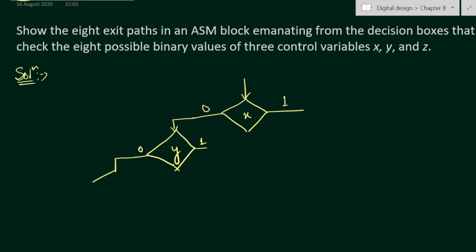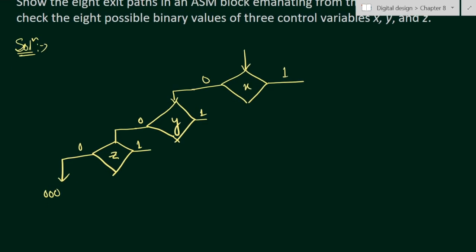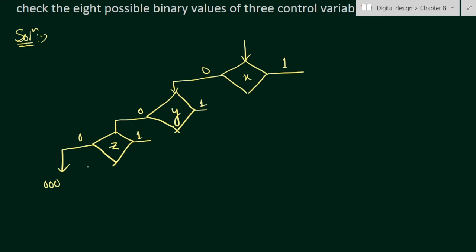We add another decision box for Z. When Z equals zero it comes this side, and Z equals one goes the other side. So for X=0, Y=0, Z=0 we get combination 000, and for X=0, Y=0, Z=1 we get combination 001.